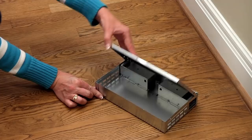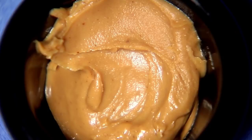Open the top of the trap. Bait the trap using peanut butter or anything high in protein like chocolate or hazelnut spread in the inside of the trap.